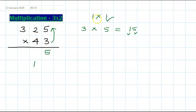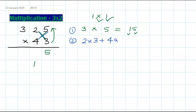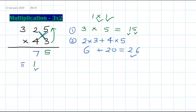Step 2 uses the IXI cross method. You cross-multiply 2 times 3 and 4 times 5. That's 6 plus 20, giving 26, and adding the carry of 1 gives 27. Write down 7 and carry 2 forward.